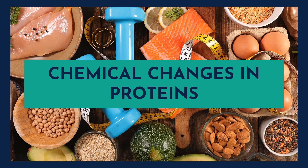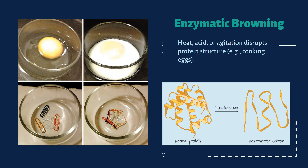Now we will discuss chemical changes in proteins. Like carbohydrates, proteins also undergo amazing transformations. Enzymatic browning can happen in proteins too — this is why shrimp turns pink when cooked, as heat inactivates enzymes that keep their color pale. The first major protein change is denaturation: when heat acts on a normal protein, the protein gets denatured. A classic example is the egg, which you have seen in your daily routine.